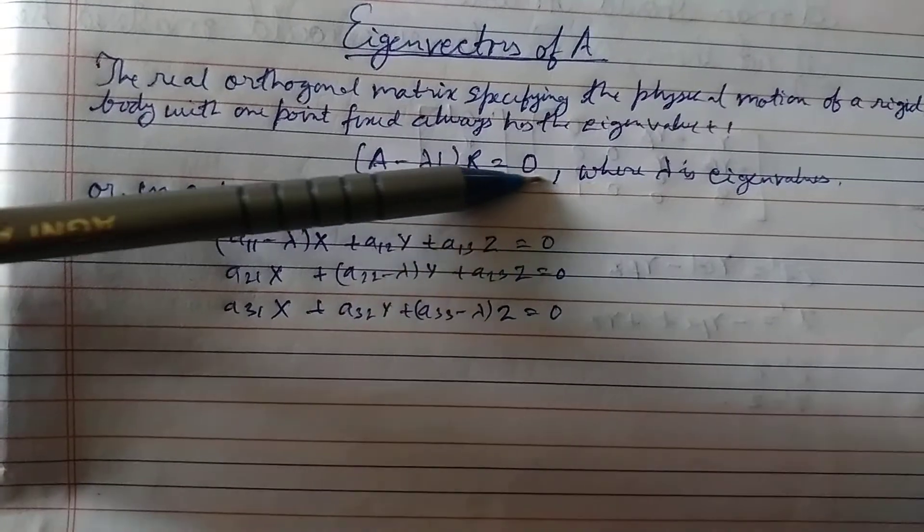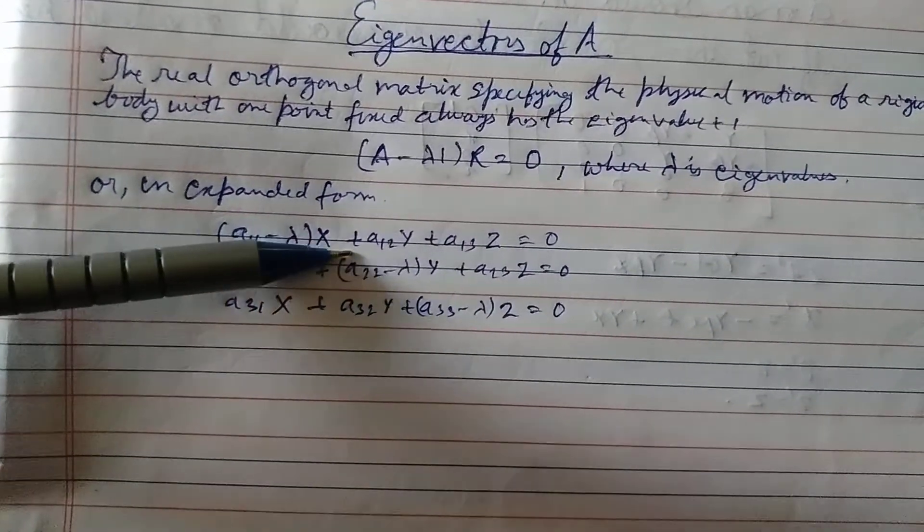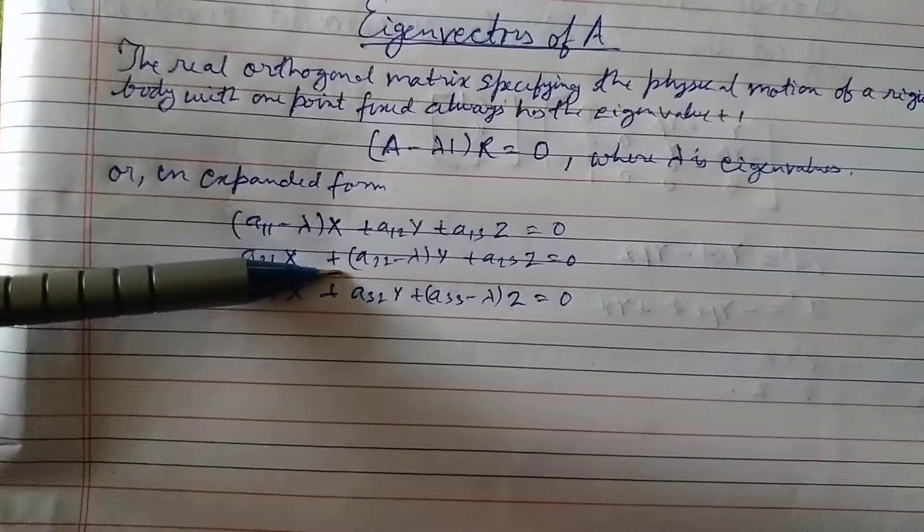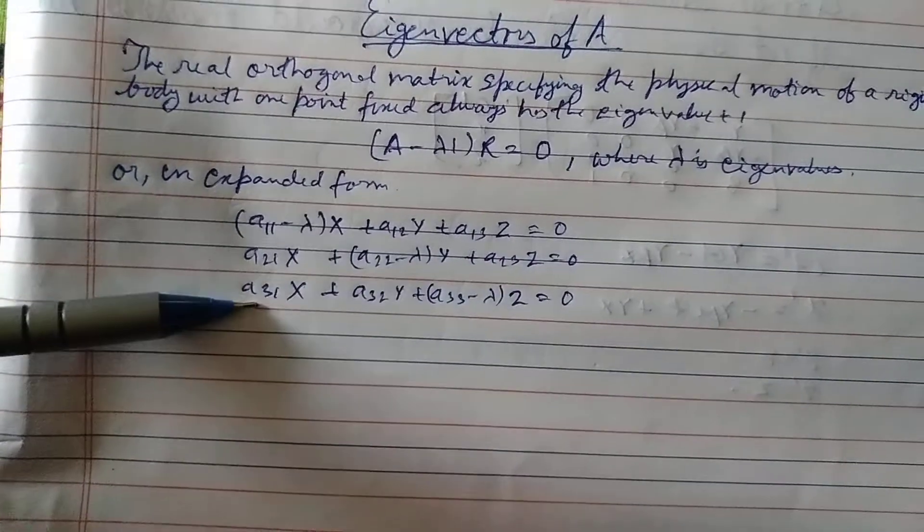(A - λI)R = 0, where λ is eigenvalue. Or in expanded form: A11 - λ times X plus A12 Y plus A13 Z equals 0, A21 X plus A22 - λ times Y plus A23 Z equals 0, A31 X plus